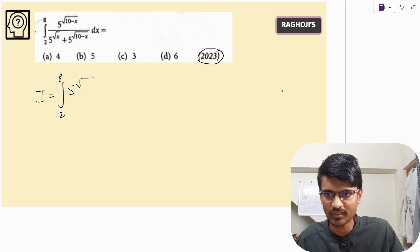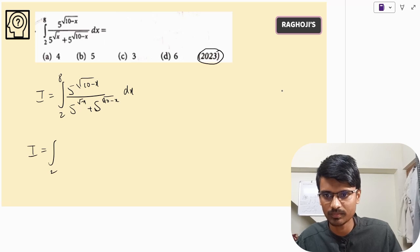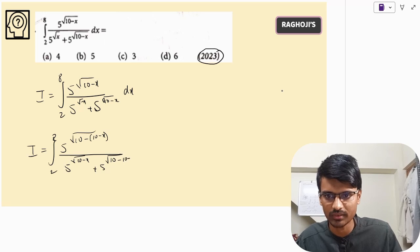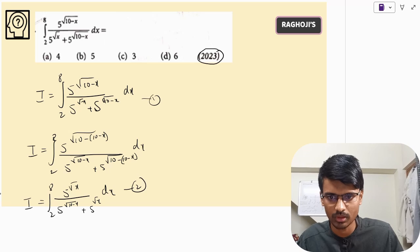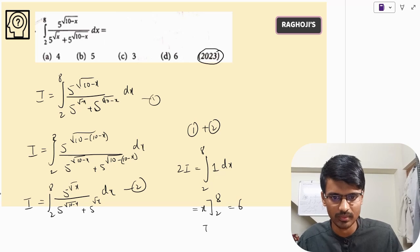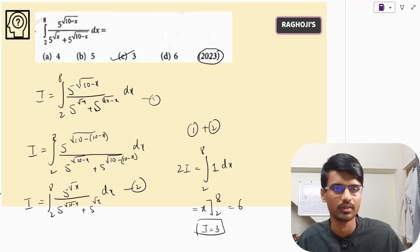The 2023 question has limits 2 to 8. We apply the same property with A plus B equals 10, replacing x with 10 minus x. The numerator becomes ⁵√(10 − (10−x)) which reduces to ⁵√x, and the denominator becomes ⁵√(10−x) plus ⁵√x. Calling the original as equation 1 and the transformed as equation 2, adding gives 2I on the left and the integrand simplifies to 1. The integral of 1 from 2 to 8 is 6, so 2I = 6 and I = 3. The correct answer is option C.